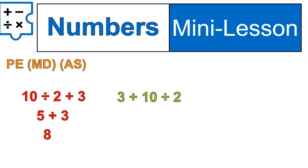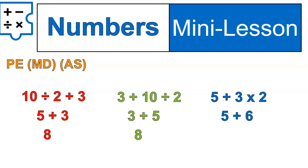I want to show you another question that looks different but is exactly the same thing. We do the division first, then the addition, because we always do division before addition. So 10 divided by 2 gives us 5, and then 3 plus 5 gives us 8. The answer is exactly the same. In our final question I threw in some multiplication along with addition. When you have the choice, you do multiplication first — so 3 times 2 gives us 6, and then 5 plus 6 leaves us with 11.